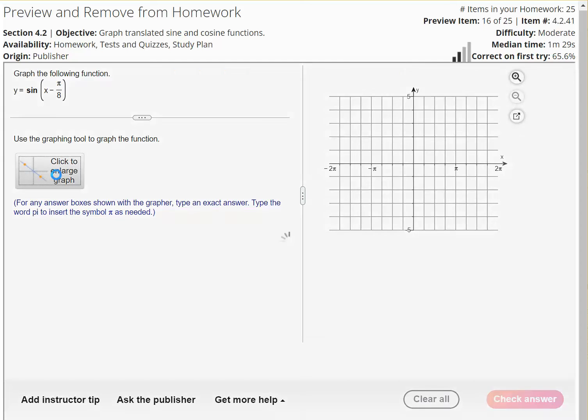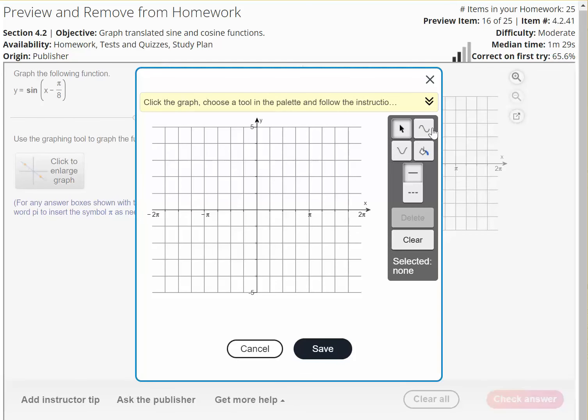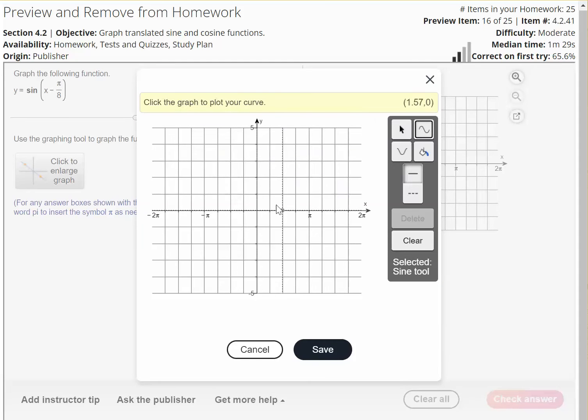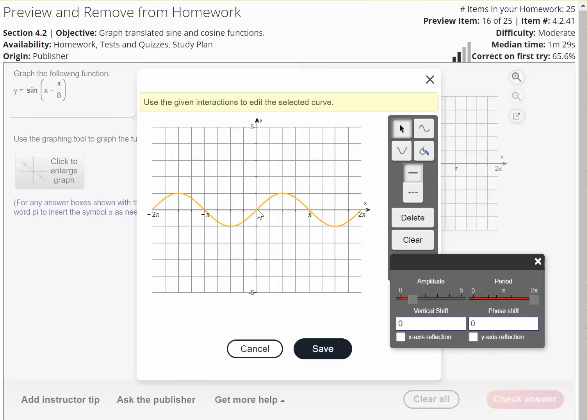So you'd want to start by clicking on here and choosing the sine curve, which starts at 0, 0. One period starts at 0, 0 and ends at 2 pi.